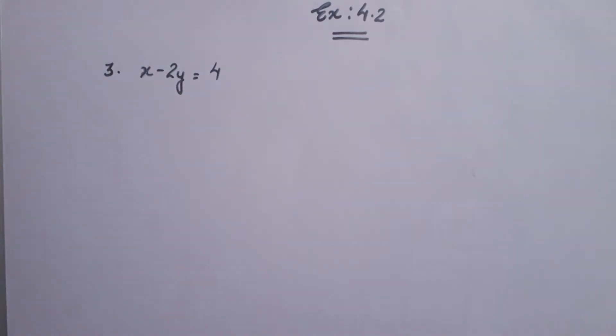Dear students, in third sum we have checked which of the following are the solution of the equation x minus 2y is equal to 4 and which are not. We have given some solutions and we have to identify which solution is in them and which is not.